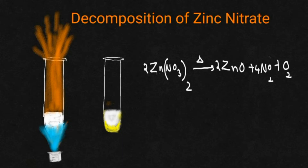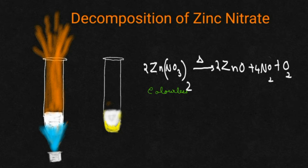Along with lead nitrate and copper nitrate, they will be asking what will be the observation of the reaction when zinc nitrate crystals are heated. Observe the picture. What is the color of zinc nitrate? It doesn't have any color — it is a colorless substance. Upon heating it will undergo thermal decomposition reaction. Immediately you can observe a reddish brown gas evolving out of the test tube, due to the formation of nitrogen dioxide.